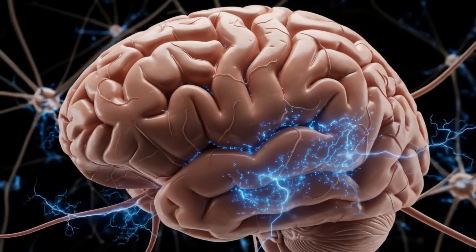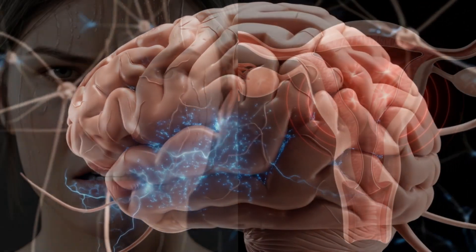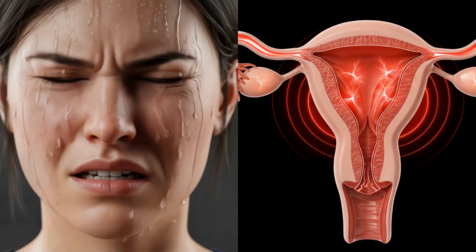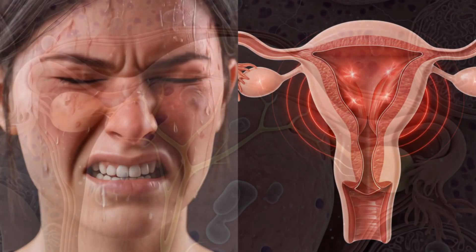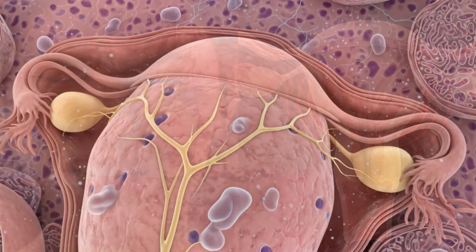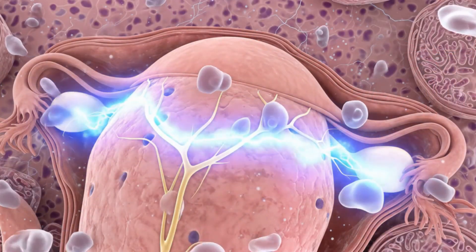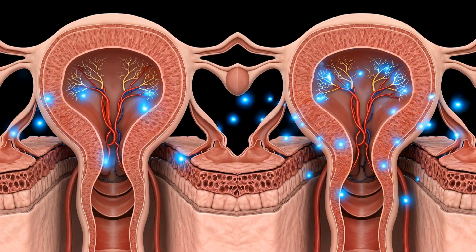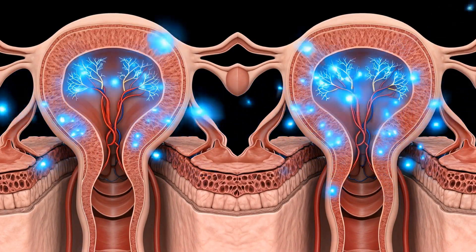The brain can also modulate these pain signals, which is why stress, anxiety, or past experiences can influence how we perceive menstrual pain. Inflammatory chemicals can amplify this pain response, explaining why some individuals experience more severe cramps than others.